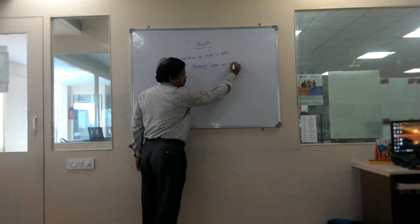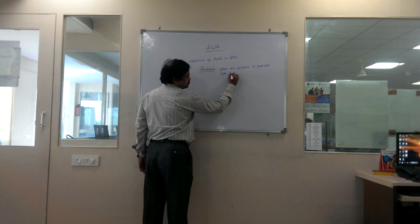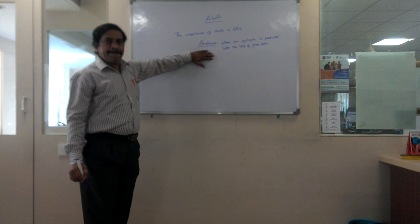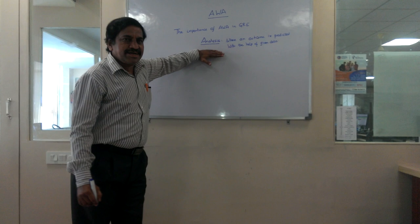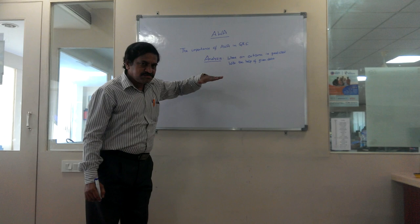Analysis is where an outcome is predicted with the help of given data. This analysis is normally provided to us and we need to analyze the given data, take the information which is important to us, and then predict an outcome based on the data that is provided to us.